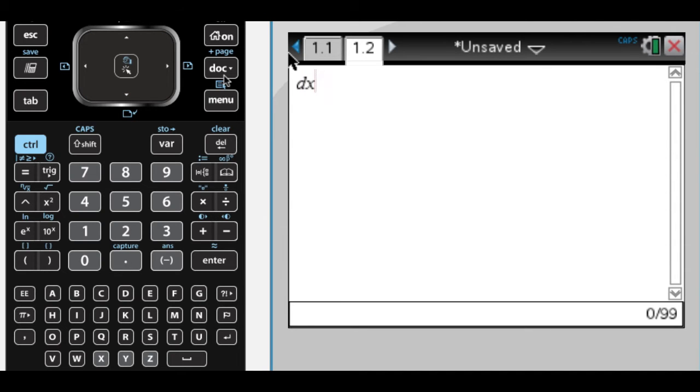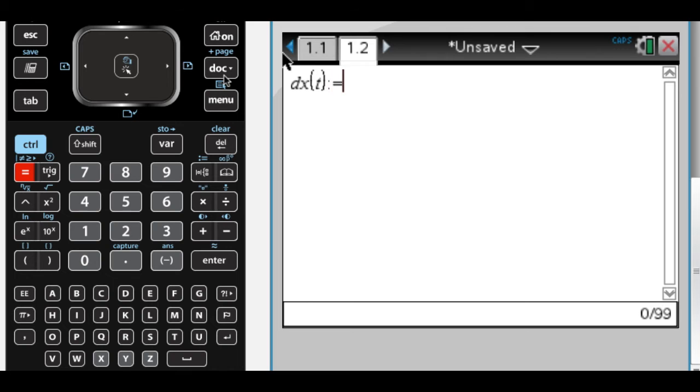So let's see, they give us dx/dt, so I'm going to say dx of t and store that value so I can use it. That's 12t minus 3t squared.